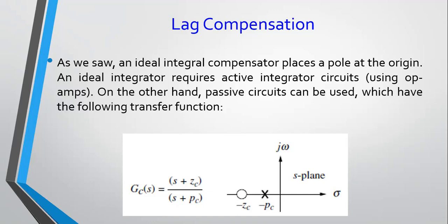I'll end this video here. The next video is going to look at the PD controller — a longer video where we'll tackle the transient part of your system. If you want to change the settling time, peak time, overshoot, or natural frequency, you can modify these by moving from your operating point to other points, and for that we'll cover the PD controller and the lead compensator. Thank you for watching.